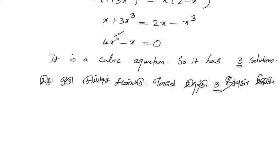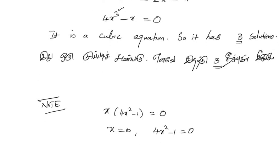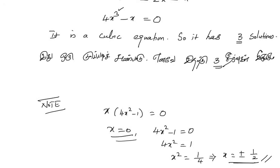Factorizing: 4x cubed minus x equals 0, so x times (4x squared minus 1) equals 0. Therefore x equals 0, or 4x squared minus 1 equals 0, giving x squared equals 1 by 4, so x equals plus or minus 1 by 2. Thus x equals 0, plus 1 by 2, and minus 1 by 2 — giving 3 solutions as the answer.